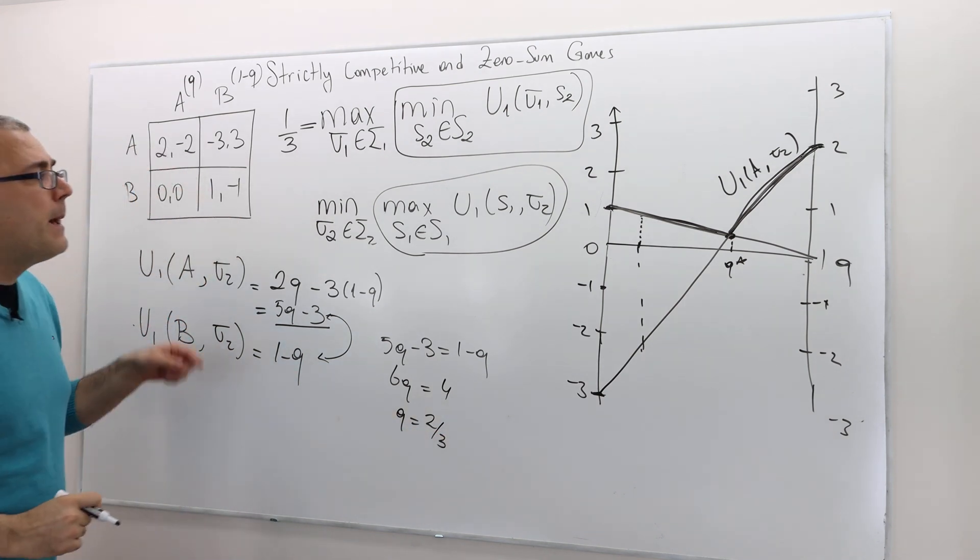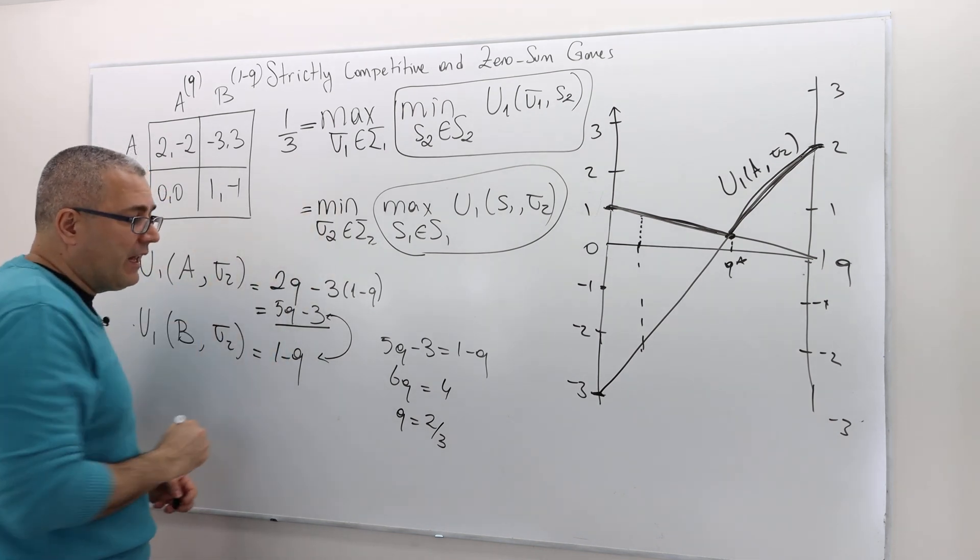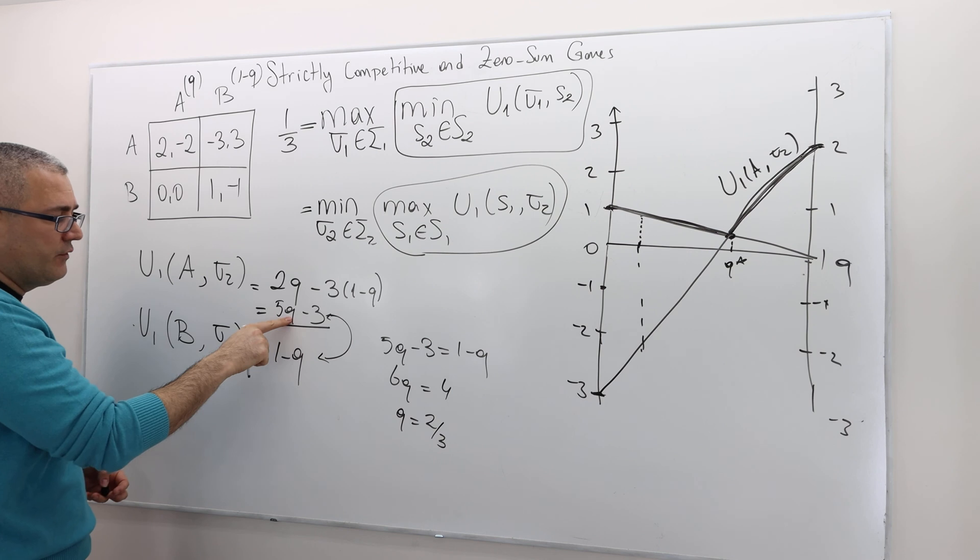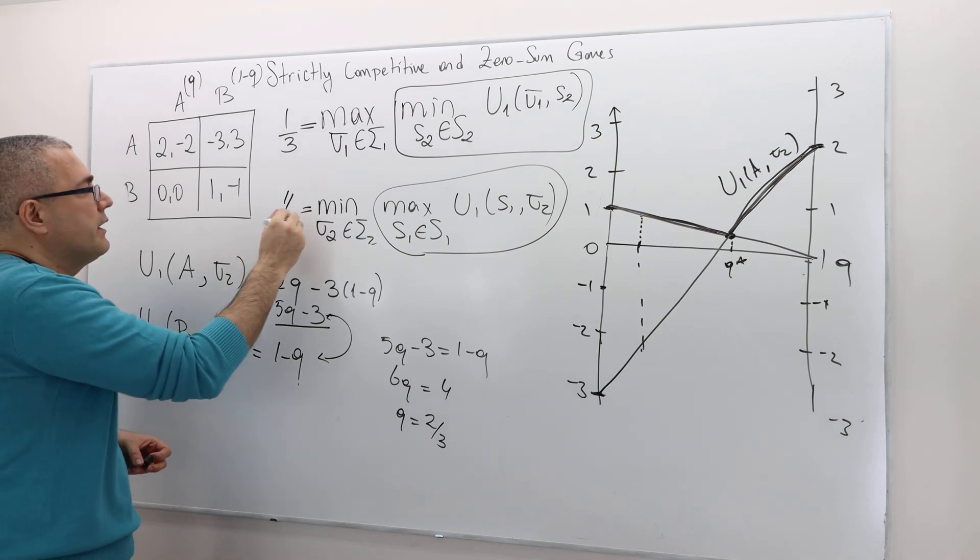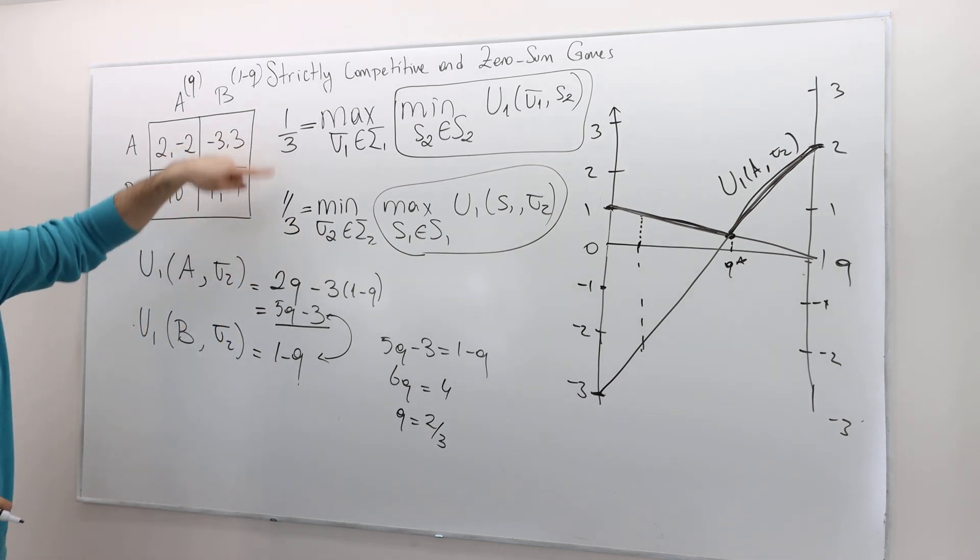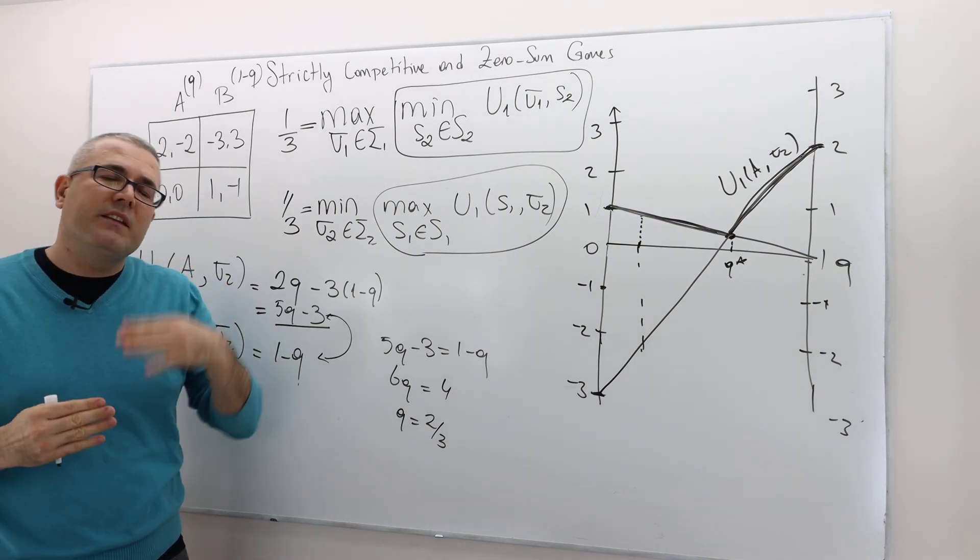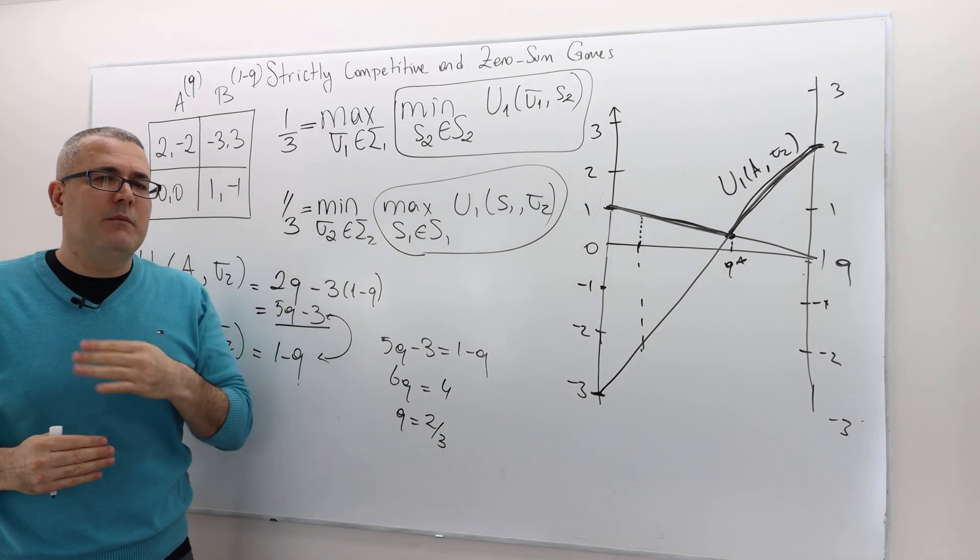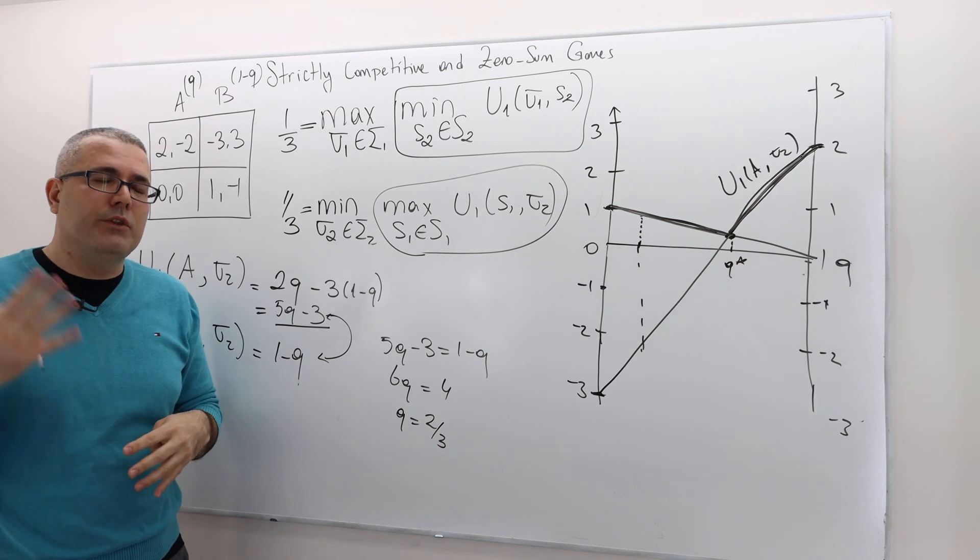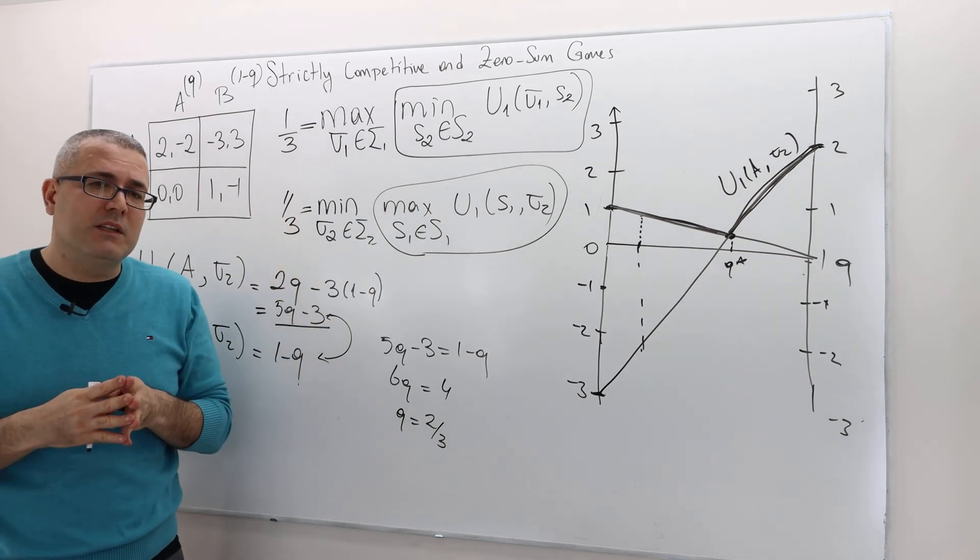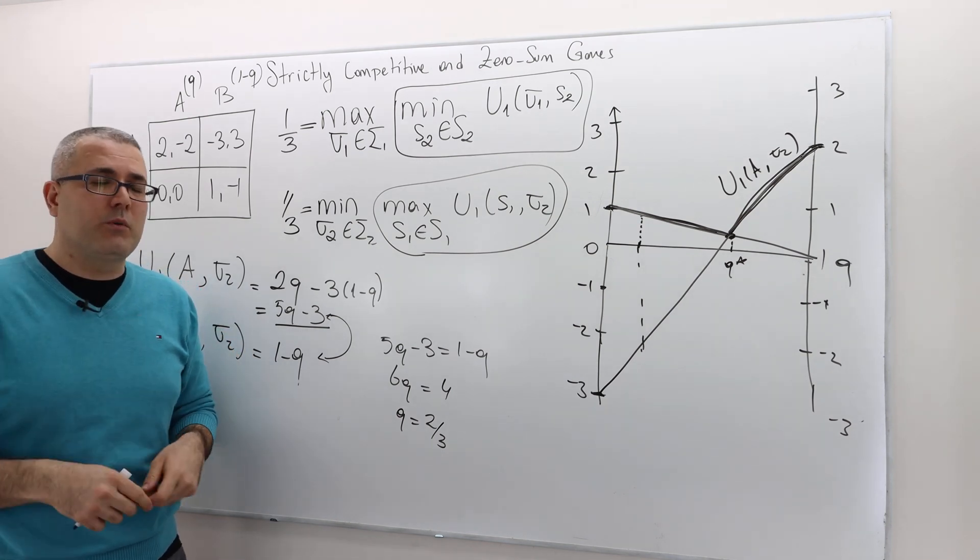So this is the min-max strategy of player 1. But what is the min-max value? Just plug this back to here or here. It's going to be the same thing. So if I plug it here, it's going to be 1 minus 2 over 3, so it's 1 over 3. Same as the max-min value. Question is, is this a coincidence? I mean, can I say that for all zero-sum games, the max-min and the min-max value are equal, or is this just a rare example? No, it is true that these two values must be the same. And this is what John von Neumann has proved in 1928. So this is what we're going to prove next.